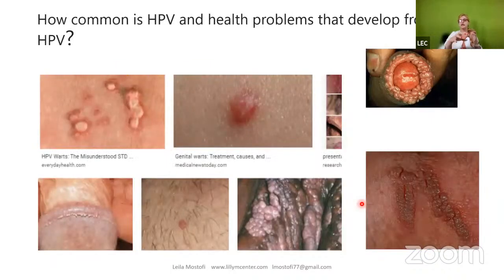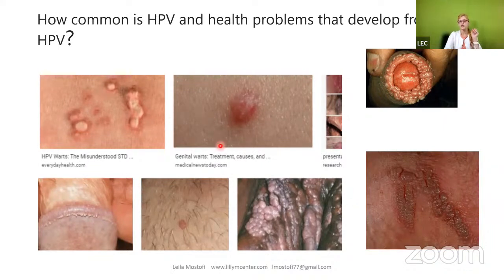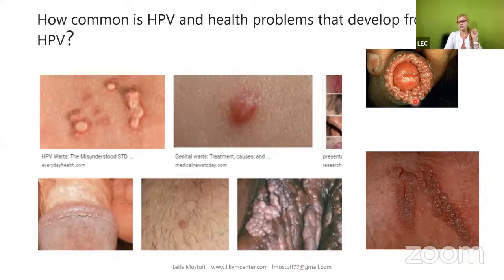These are the types of warts that can happen with HPV — genital warts. As you can see, they can appear on the penis, thigh, labia, and other genital areas.